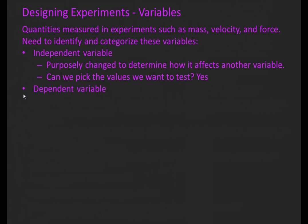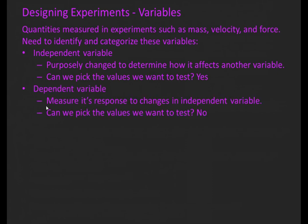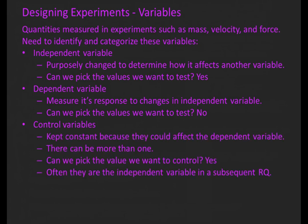The next important variable is the dependent variable. We measure its response to changes in the independent variable. If you ask yourself, 'Can we pick the values we want to test?' and the answer is no, chances are this variable is the dependent variable. Finally, control variables are important. These are kept constant because they could affect the dependent variable. There can be more than one of them, and we can pick the value we want to control, so if you can answer yes to that question, it's probably a control variable.